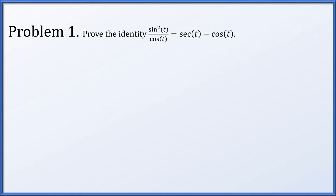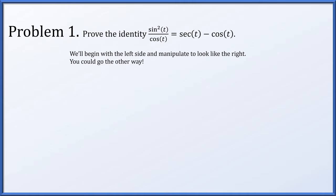First up, let's prove the identity sine squared t over cos t equals secant t minus cos t. We're going to start with the left-hand side and manipulate it to look like the right-hand side. You could definitely go the other way. I just happen to see a nice first step using a Pythagorean identity, seeing that there's a sine squared t. Observe, there are going to be many possible correct proofs — I'm just giving one here. If you did it differently and think you're correct, by all means ask your instructor to evaluate your own proof.